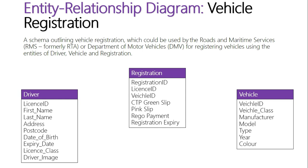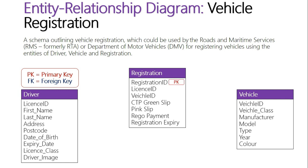Those are the attributes of the three entities — the actual fields that make them up. The final part in developing an entity relationship diagram is establishing the relationships. We know that relationships are developed through the primary and foreign keys, which are used to reference all other attributes within another entity. So let's first highlight the primary keys: rego ID is the main primary key of registration, and in driver, license ID is the primary key.